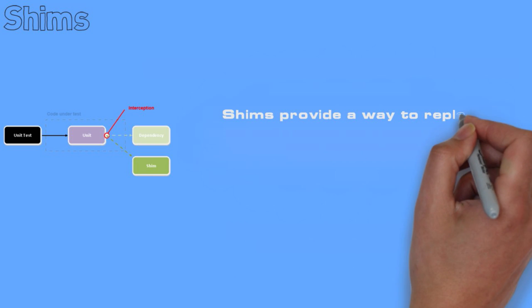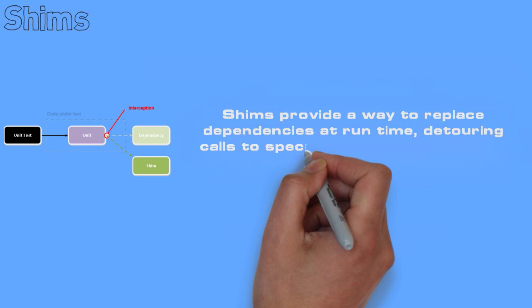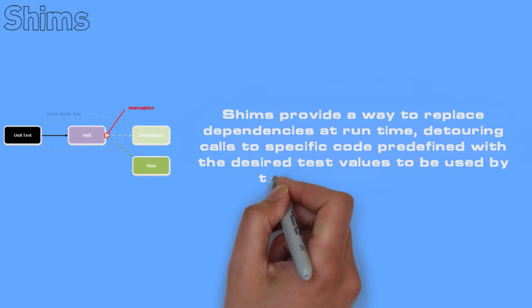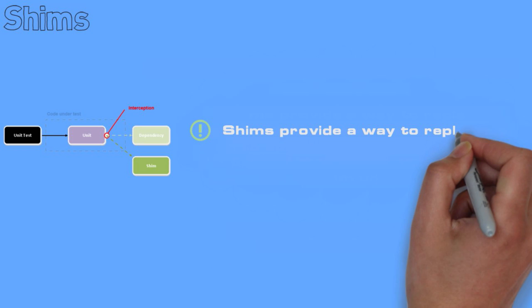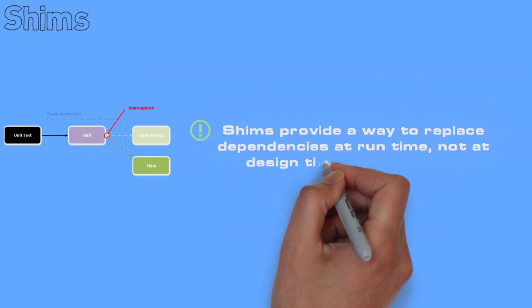Shims provide a way to replace dependencies at runtime, detouring calls to specific code predefined with the desired test values to be used by the system under test. Note, shims provide a way to replace dependencies at runtime, not at design time as with stubs.